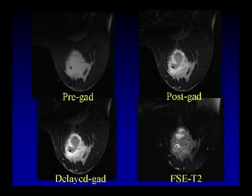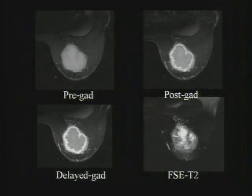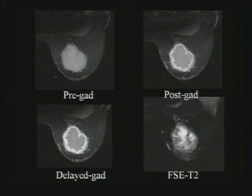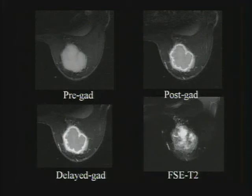The black dot is the clip — a signal void on MRI — placed because neoadjuvant chemotherapy lesions may shrink and become difficult to see, serving as a marker for subsequent surgical excision. On delayed imaging this lesion is brighter than immediately post-contrast, showing type 1 persistent enhancement rather than washout. Most cancers do not show washout — washout is for the textbook cancer. What's important is strong initial enhancement along with the clinical, mammographic, and sonographic findings.